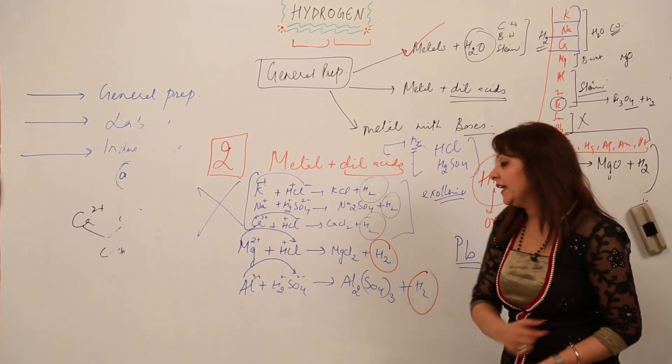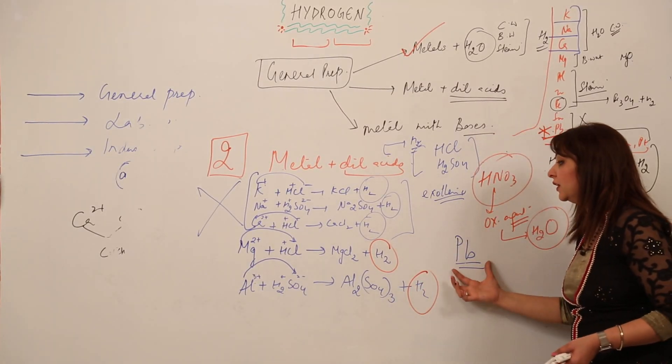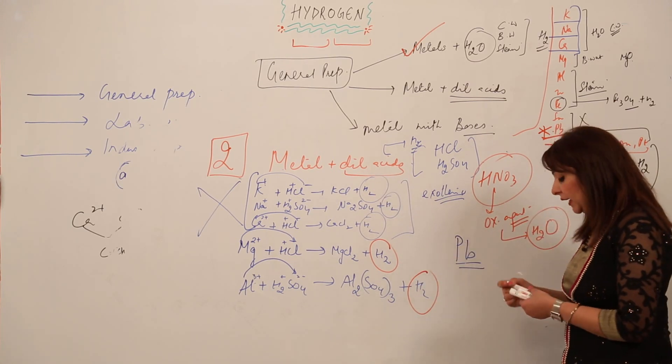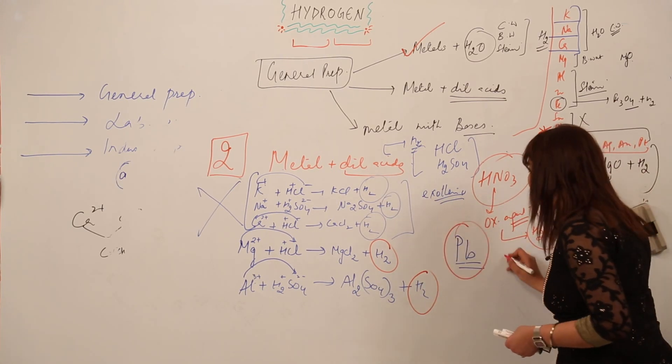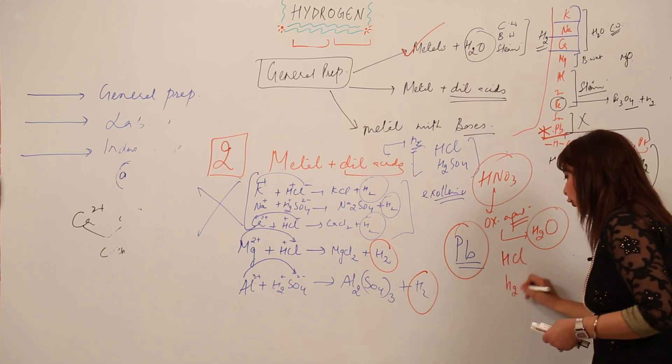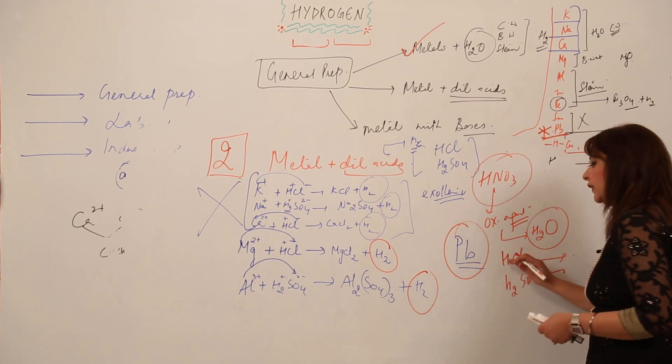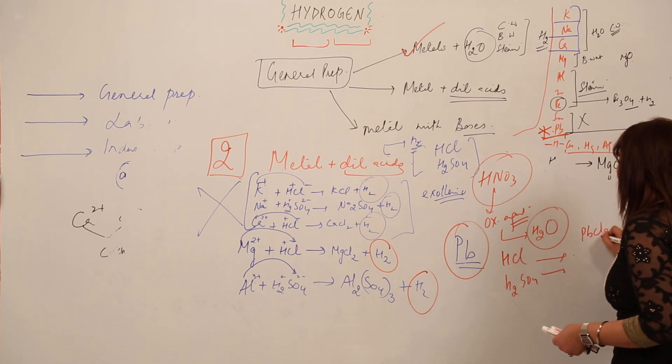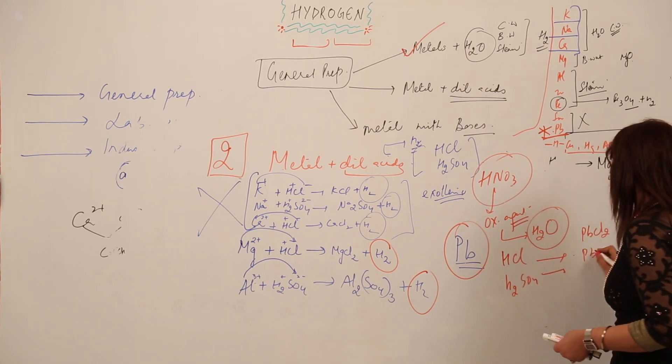We cannot use lead for preparing hydrogen from dilute acid. The reason being when lead is used with HCl and H2SO4, it definitely reacts with them, but when it reacts with HCl it leads to the formation of lead chloride, and when it reacts with sulfuric acid it leads to the formation of PbSO4, that is lead sulfate.